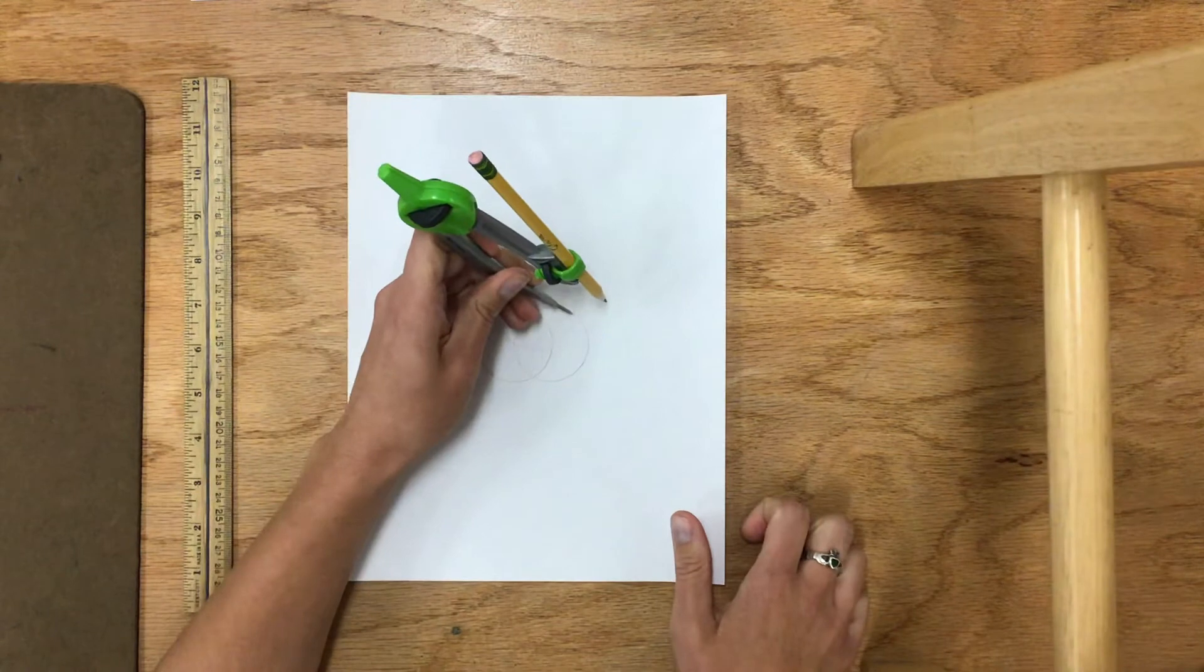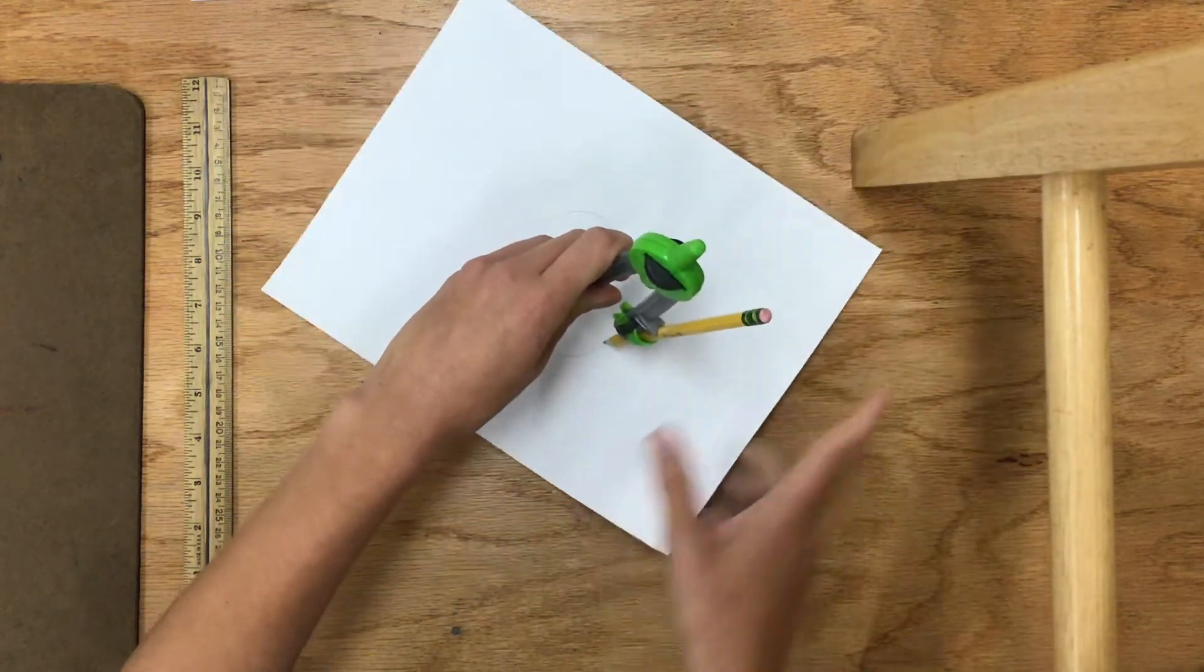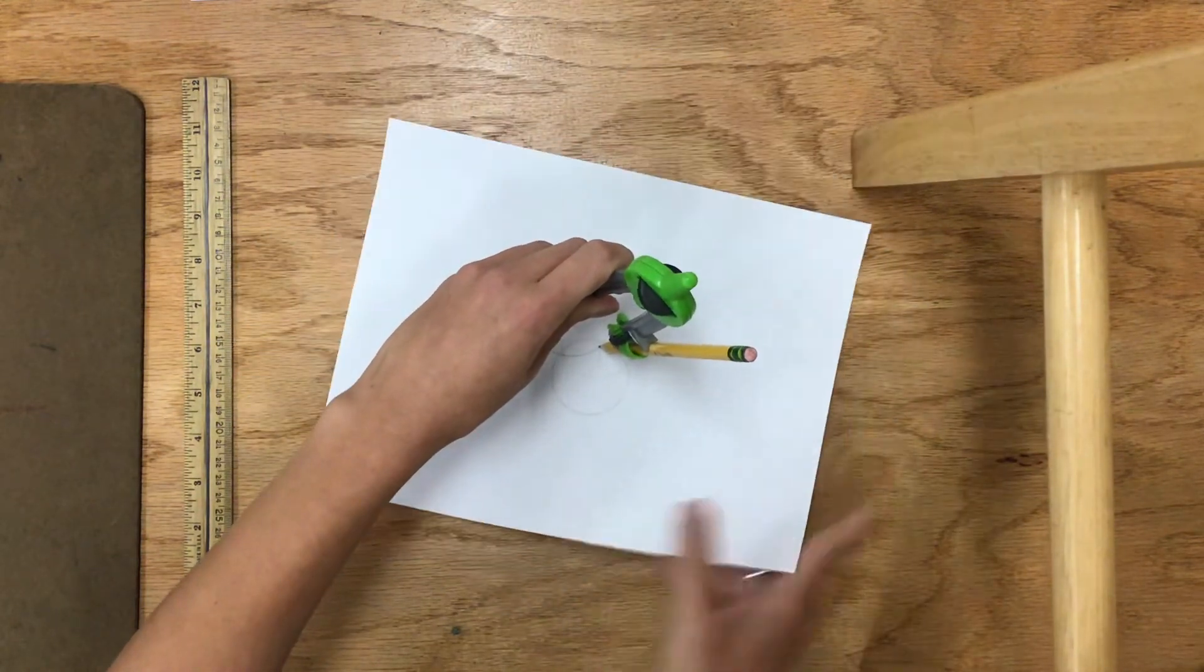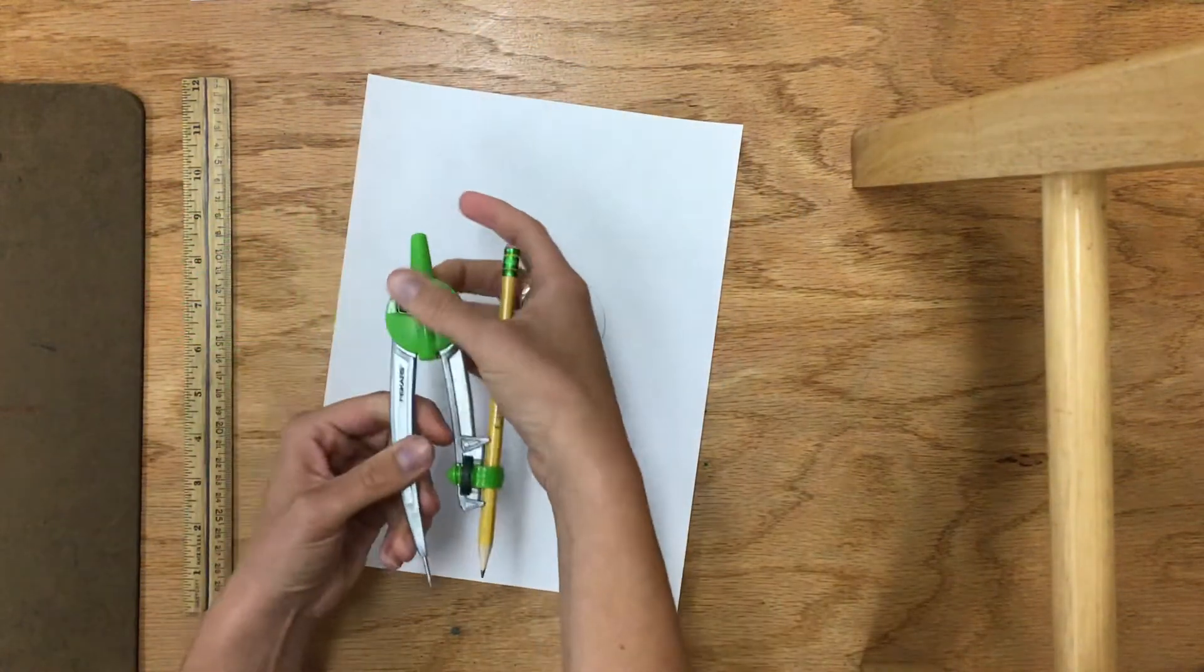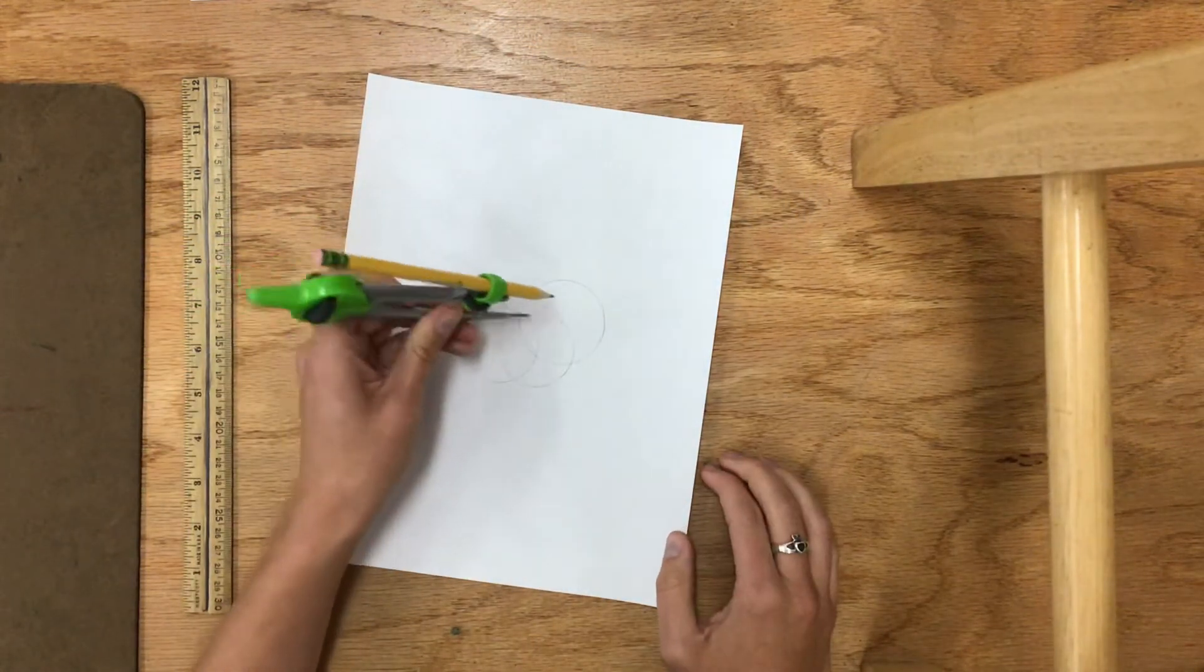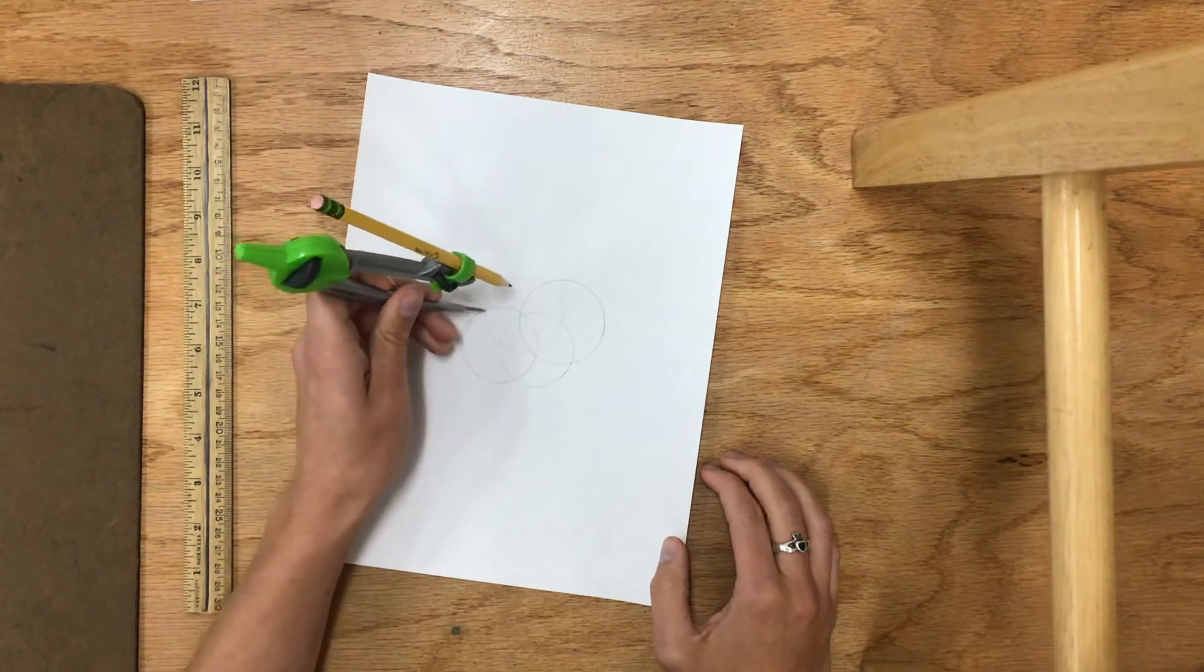Then I'm going to do this one, and if I keep my compass the same, if I don't move it, your circles will start crossing each other in really cool places.